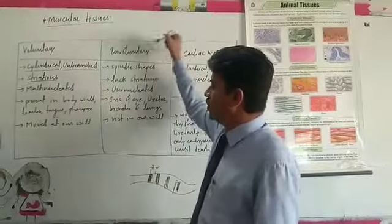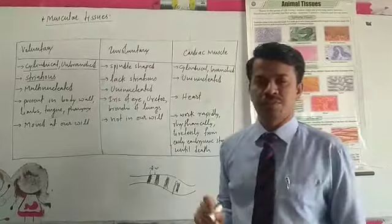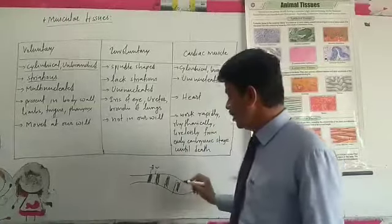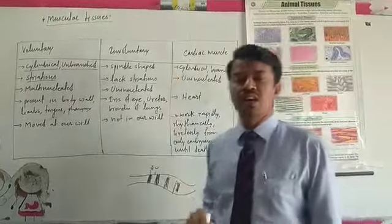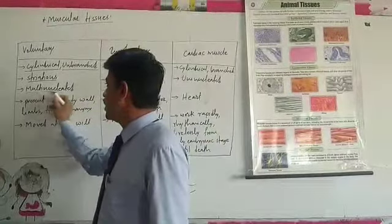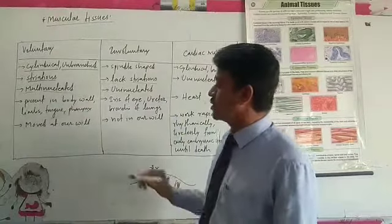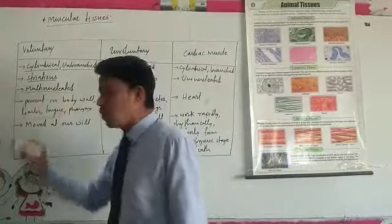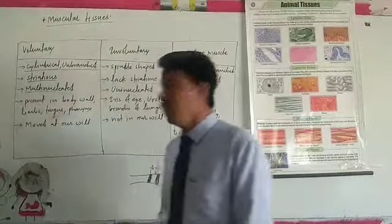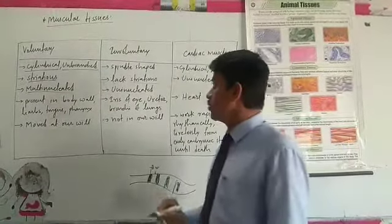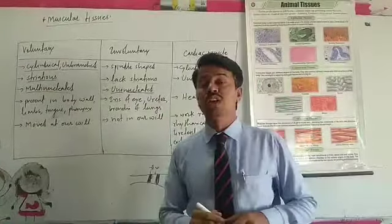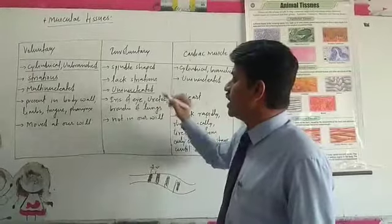Involuntary muscles are spindle shaped, but they lack striations — striations are not present on involuntary muscles. In their cells, only a single nucleus is present, so they are uninucleated.